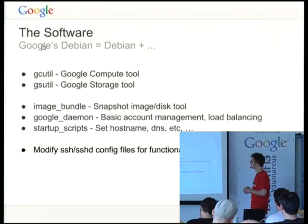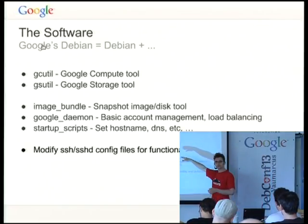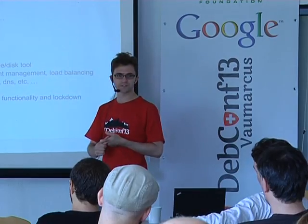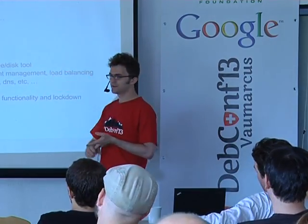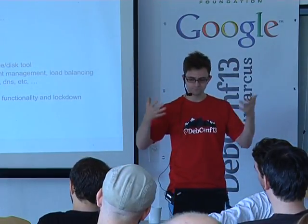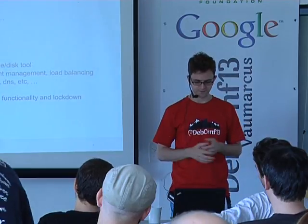So exactly what software are we talking about? We're talking about the Google Cloud tools — tools for compute, tools for storage, and tools for other products like BigQuery and so forth. We're talking about various kinds of software specifically to make the integration and make Google Compute a functional product: the ability to create snapshots of your disk images, things that manage accounts and manage IP addresses, things that set up the hostname and other things like this.